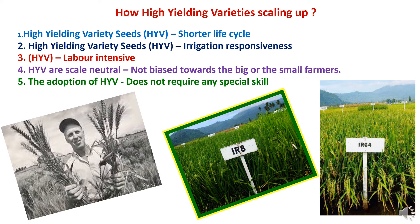High yielding varieties have a shorter life cycle, thereby enabling farmers to go for multiple cropping. For example, the new seeds of wheat complete the life cycle in 110 to 120 days, while traditional varieties of rice and wheat take about 130 to 150 days to harvest. The new seeds thus enable farmers to economize on land. Additionally, high yielding variety seeds need a lot of water for better yields, but the yield per unit area is significantly high — in terms of water required per quintal of wheat or rice production, the new seeds require less water compared to traditional varieties, thus economizing on water as well.